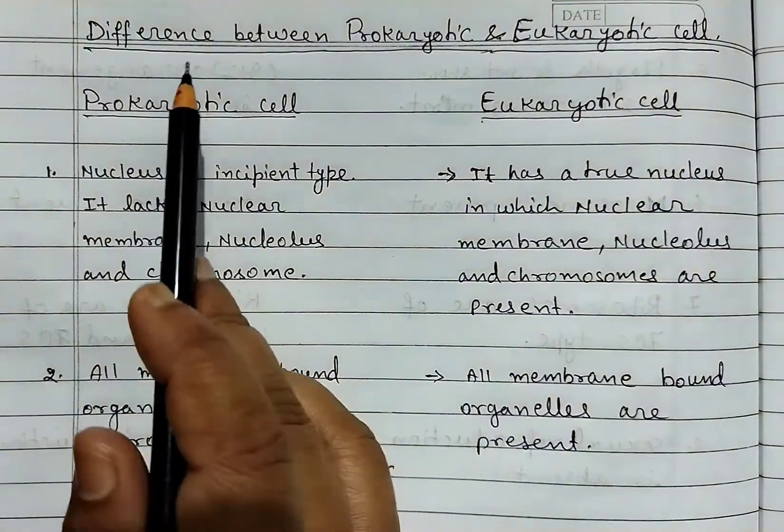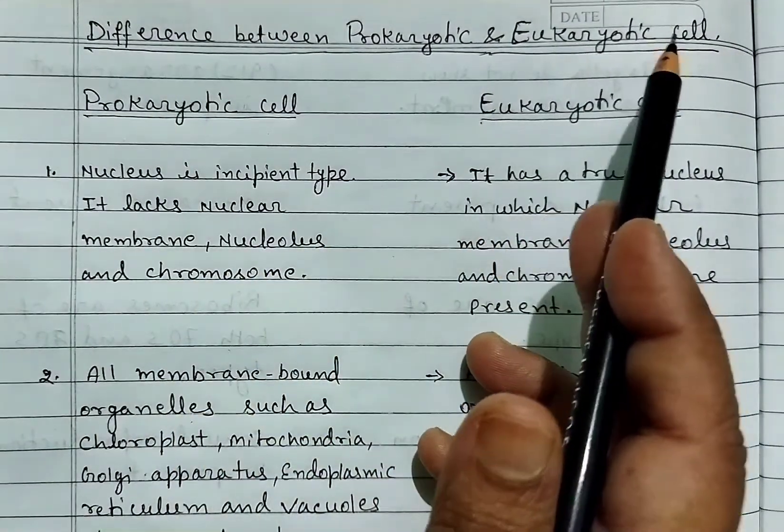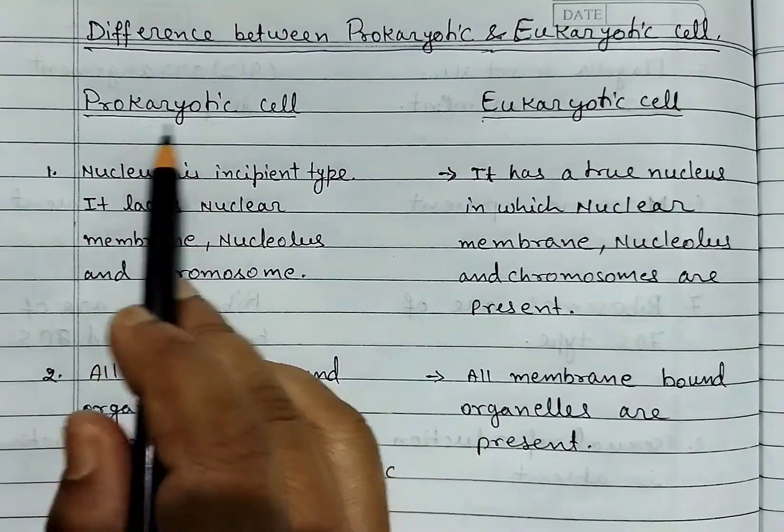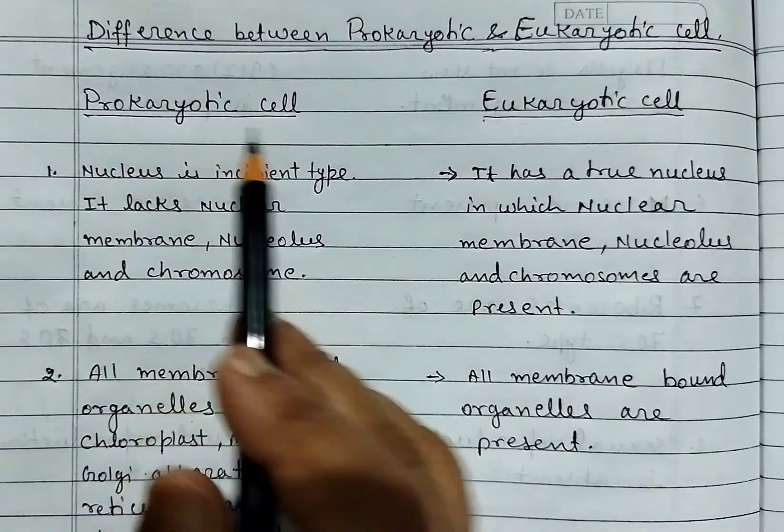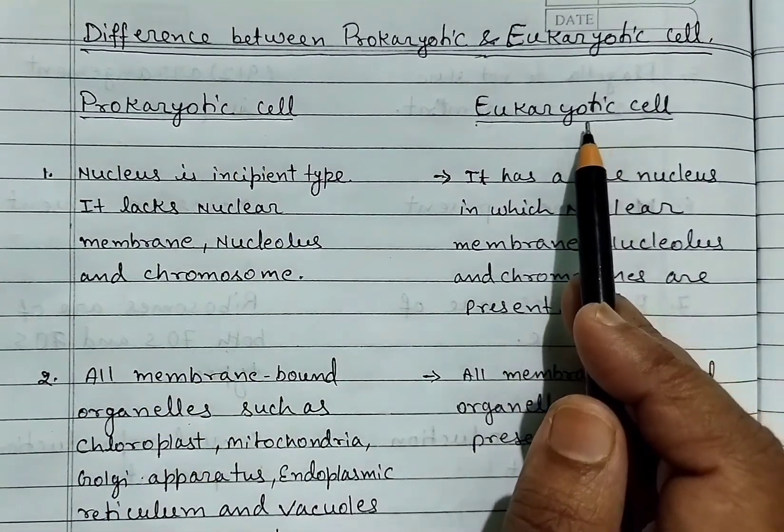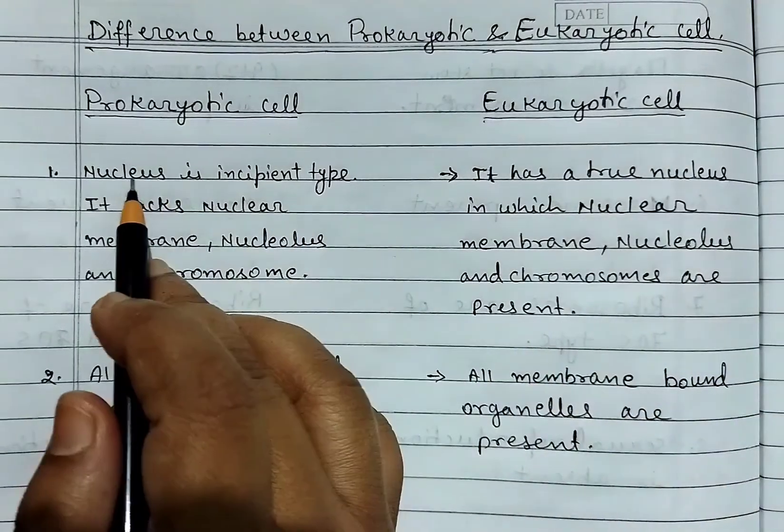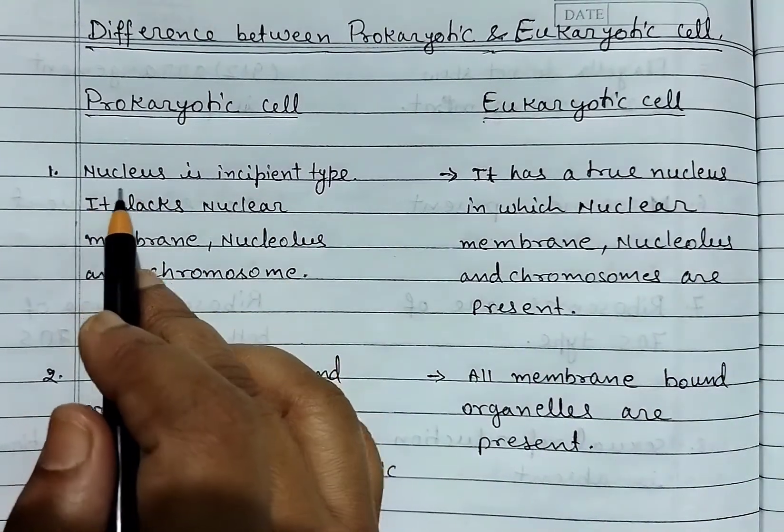Difference between prokaryotic and eukaryotic cell. Left side: prokaryotic cell, right side: eukaryotic cell. First, nucleus is incipient type in prokaryotic cell.